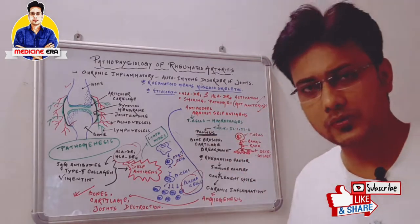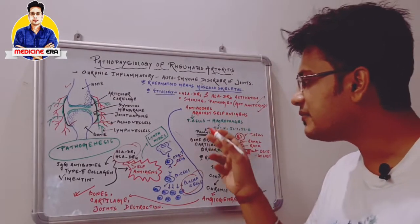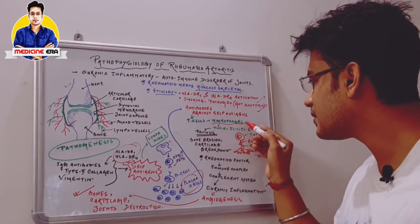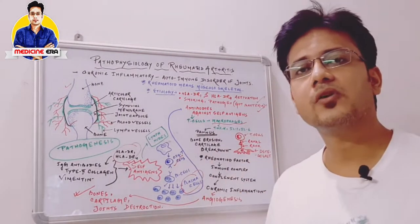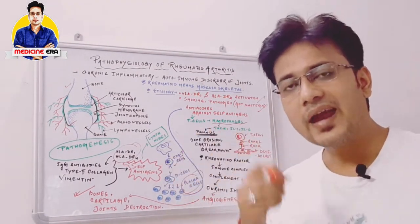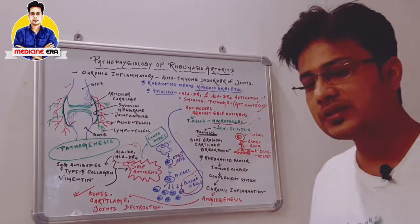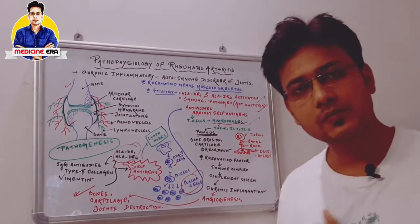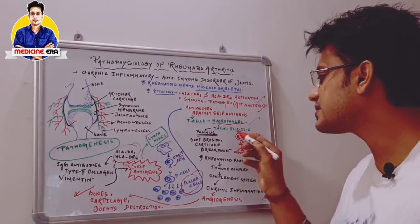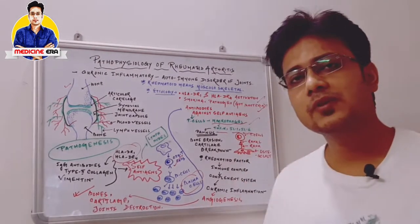These antibodies activate T-cells, and after activating T-cells, macrophages are activated. Macrophages are mainly responsible for the exocytosis and endocytosis process — they engulf antigens that externally invade our body. After activation of T-cells and macrophages, they generate TNF-alpha (tumor necrosis factor alpha), interleukin-1, and interleukin-6.